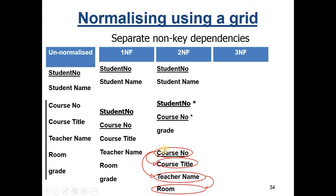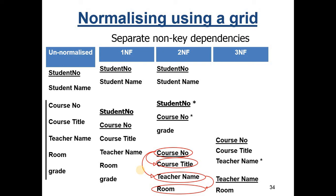Sometimes this is called a transitive dependency — a dependency that goes from course number to room through another attribute. We can see two resulting structures: teacher's name appears in the course table as a foreign key, and it is the primary key in a separate teachers table containing teacher name and room.